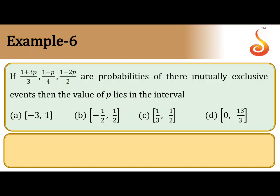1 plus 3p by 3, 1 minus p by 4, 1 minus 2p by 2 are probabilities of 3 mutually exclusive events. Find the value of p, that is, the interval in which p lies.